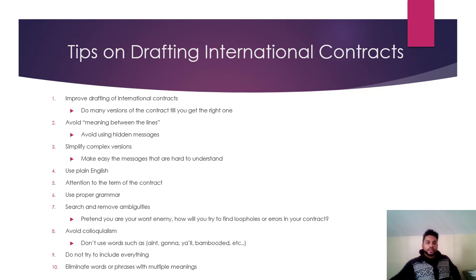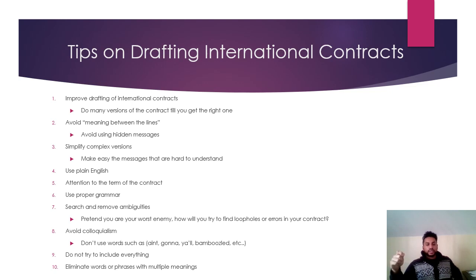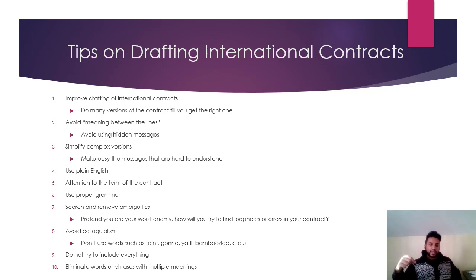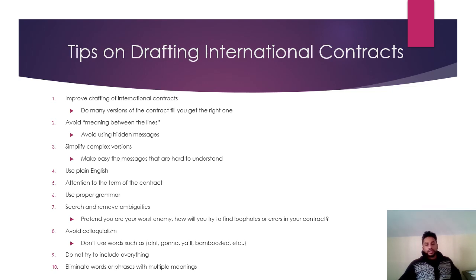Tips on drafting international contracts: do multiple versions of the contract until you get the right one. Avoid hidden messages — make difficult content easy to understand using plain English. Pay attention to contract terms, use proper grammar, and remove ambiguity. Pretend you're your worst enemy and review the contract to see if anything can be used against you. Avoid colloquialisms like 'ain't,' 'gonna,' 'y'all.' Do not try to include everything, and eliminate words or phrases with multiple meanings.